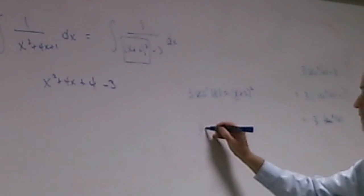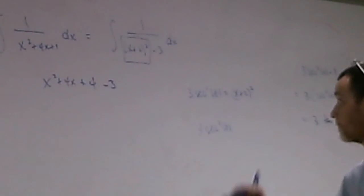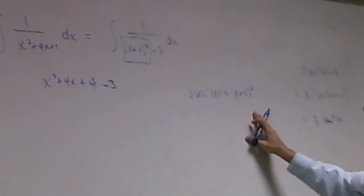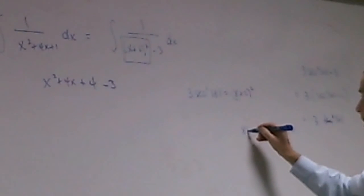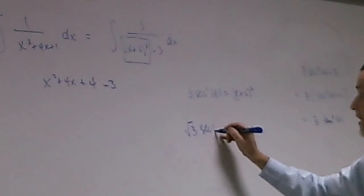Yeah, that's kind of nasty, just because the numbers aren't nice, right? So now I take the, so what that really says is x plus 2 is the square root of 3 secant of t.